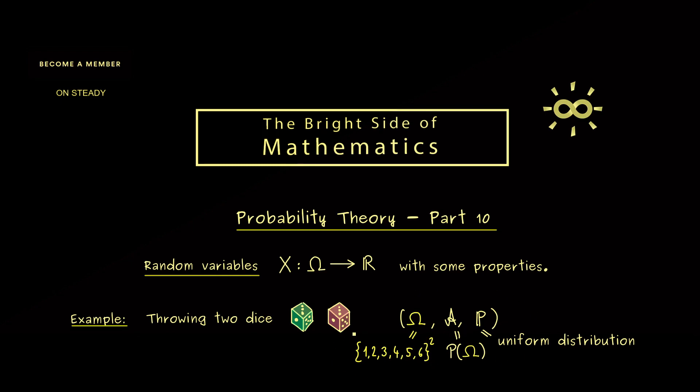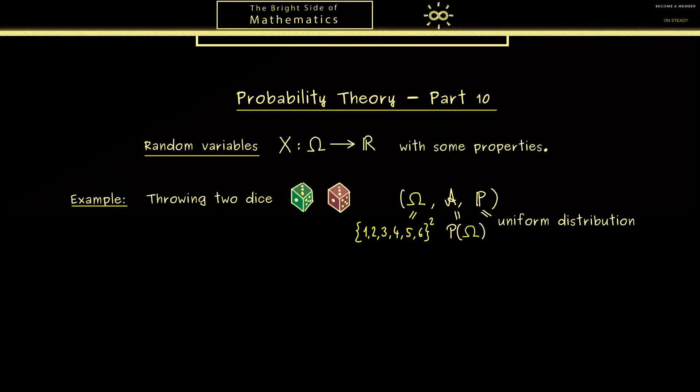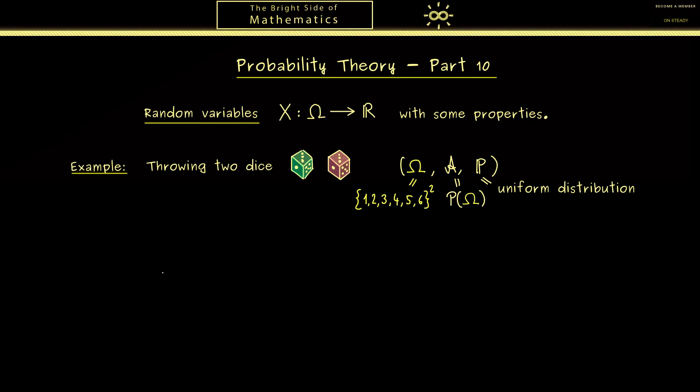So all the possible outcomes with the probabilities are given here. However, maybe we are in a situation where we are only interested in the sum of the two numbers the dice show. For example, we could be in a game where this is important and the colors of the two dice don't matter at all. Then exactly in such a case we would define a random variable, and as I told you before, we would simply call it X.